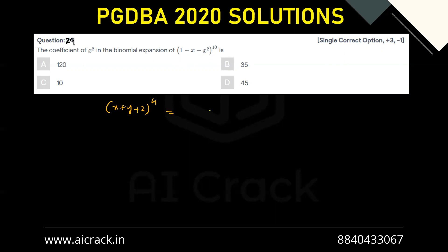the coefficient would be written as n factorial divided by a factorial b factorial c factorial. So basically the term would be written as n factorial divided by a factorial b factorial c factorial multiplied by x raise power a dot y raise power b dot z raise power c. So a plus b plus c equals to n. So this is how our term is being written.